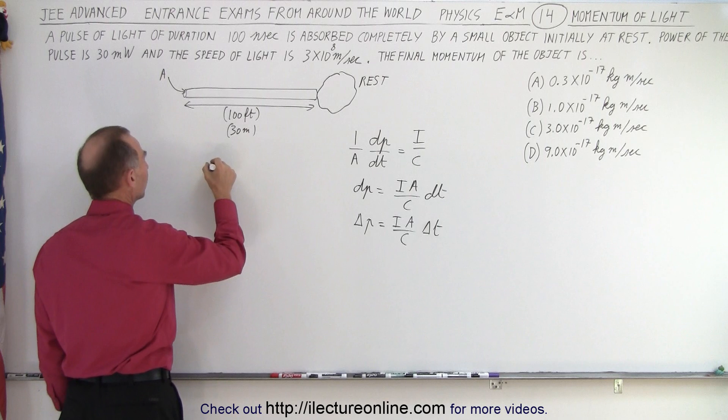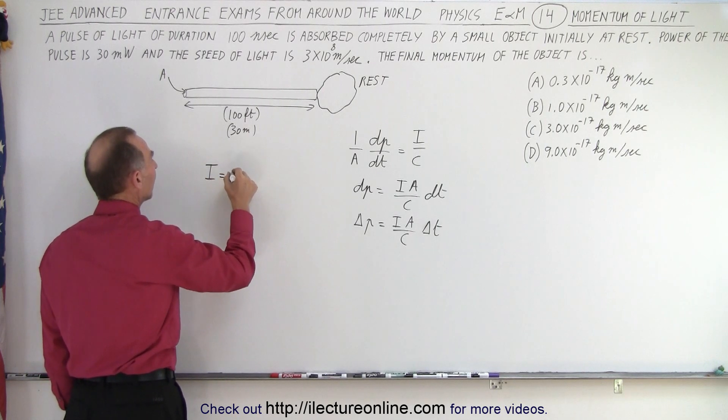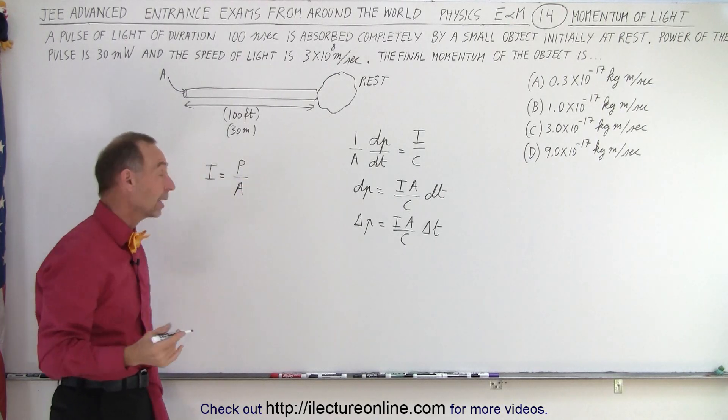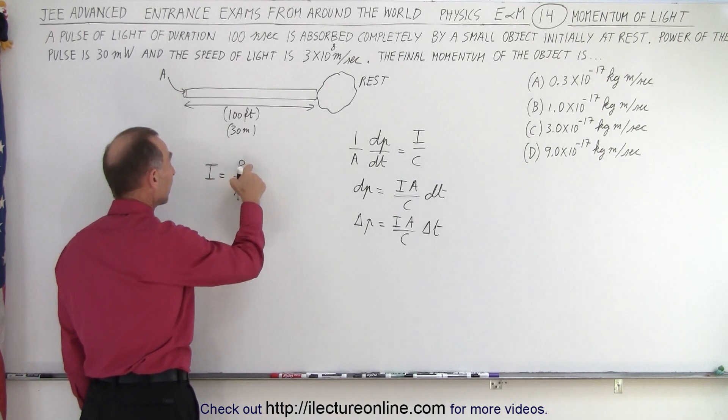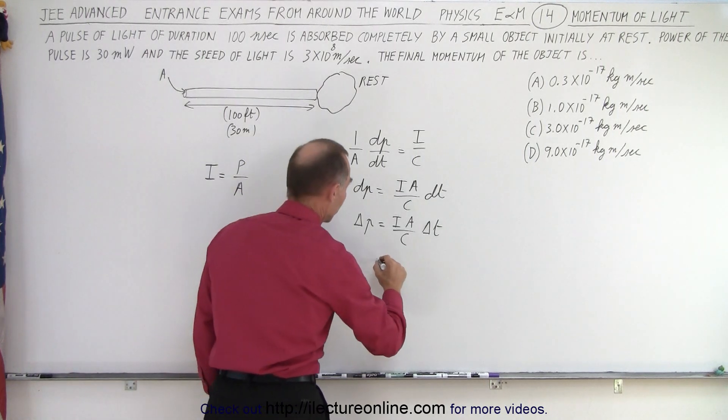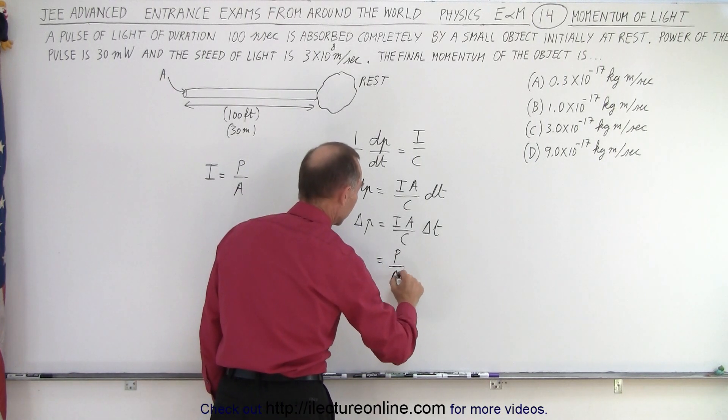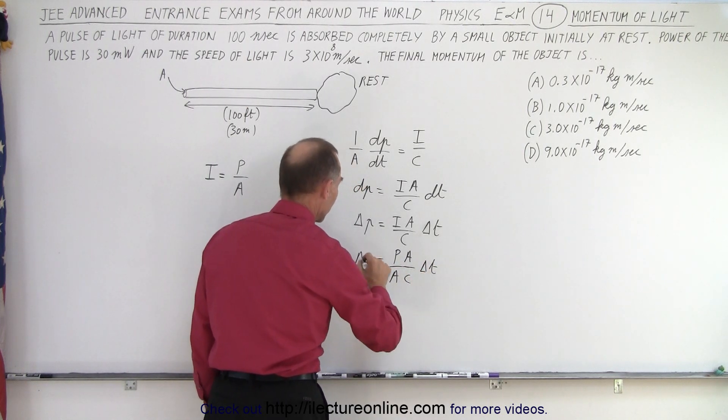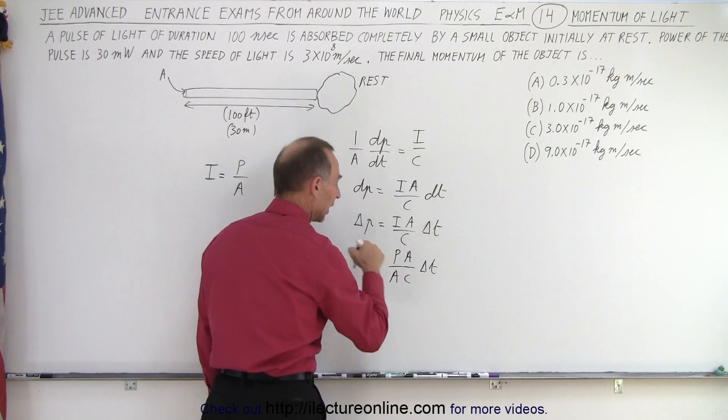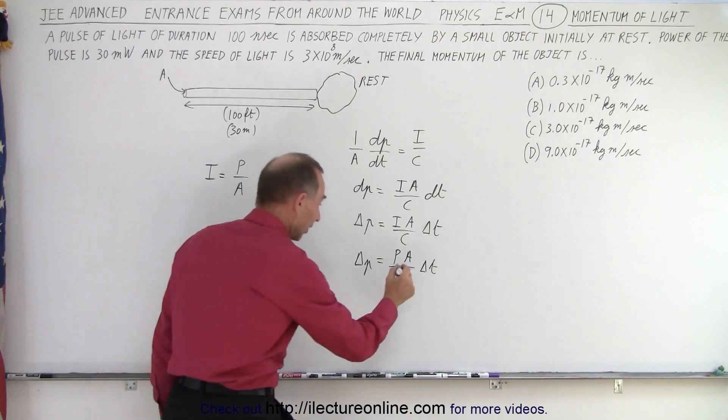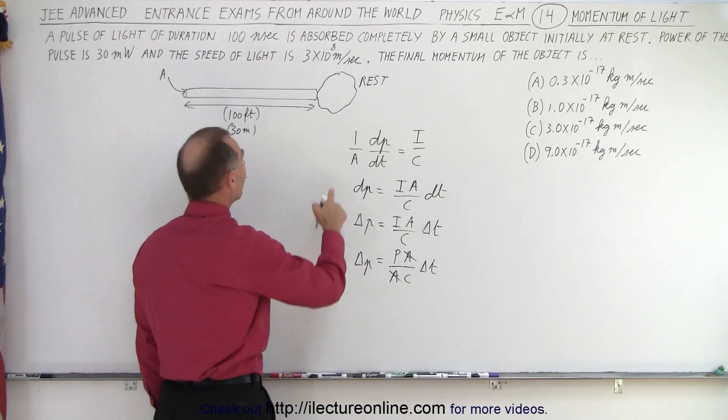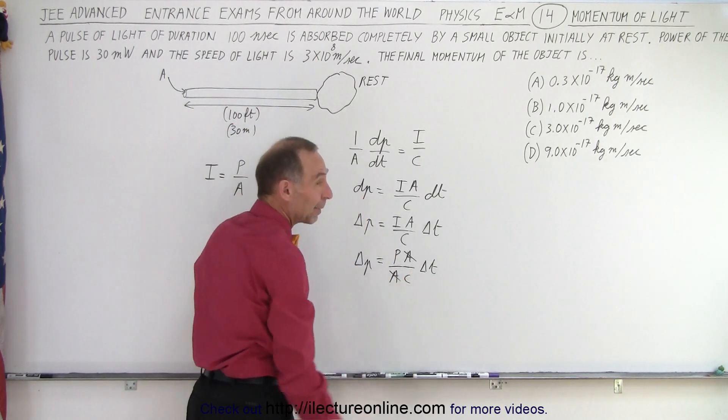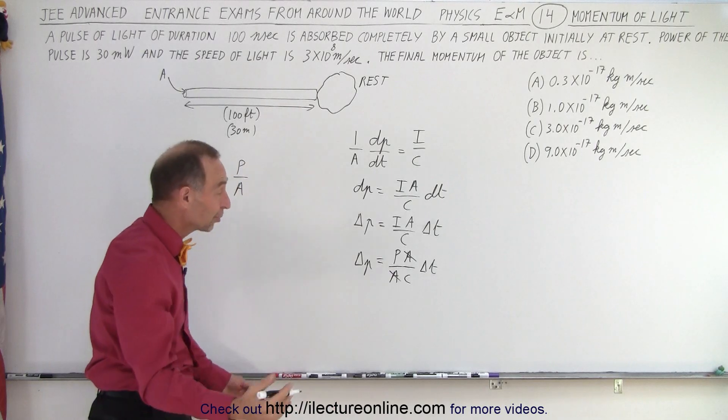Well, it turns out we have another equation that says the intensity of light is equal to the power of the source divided by the cross-sectional area over which it spreads. So we can replace the intensity by power over area. So this becomes power over area times area over c times delta t. And notice the amount of momentum imparted can now be calculated. And luckily, notice that the cross-sectional area cancels out. So we don't need the cross-sectional area. We just need the power which is given, the speed of light, and the amount of time the power lasts.